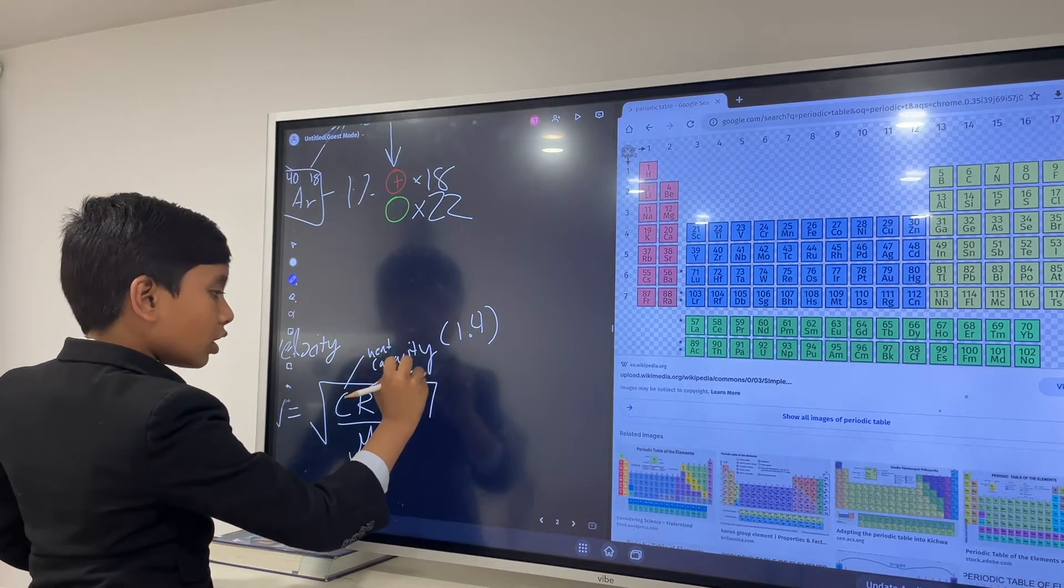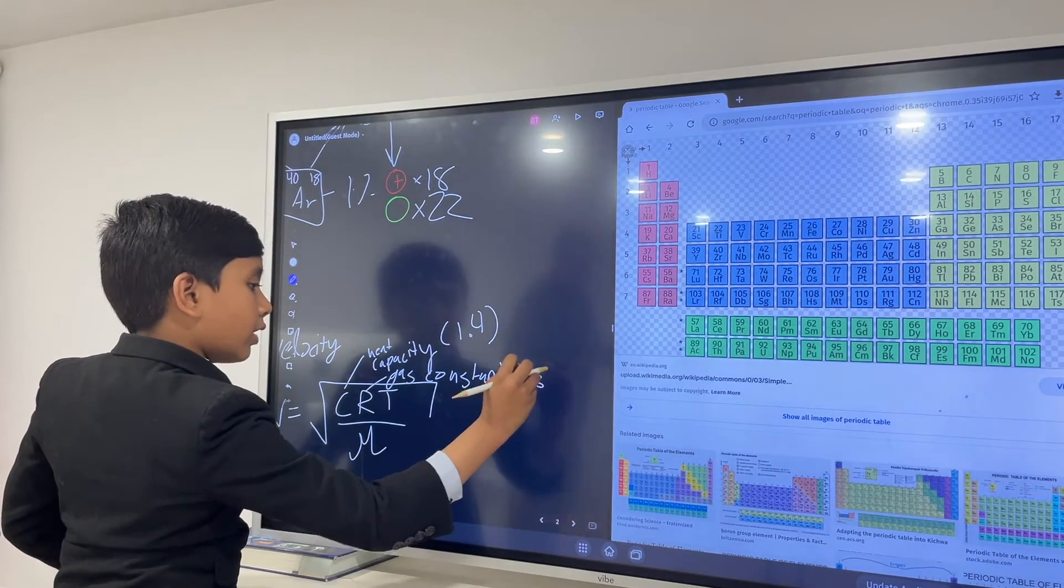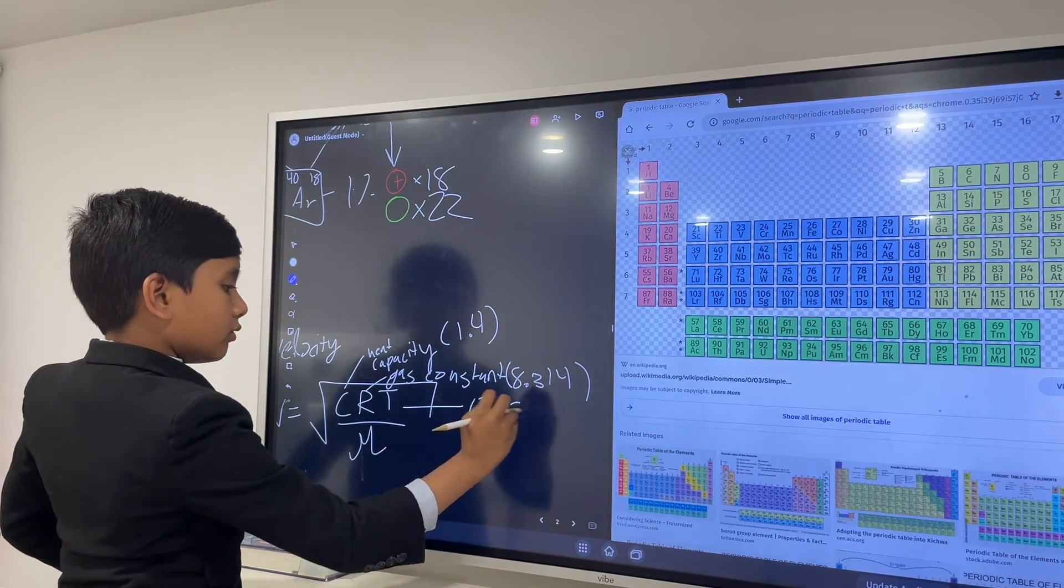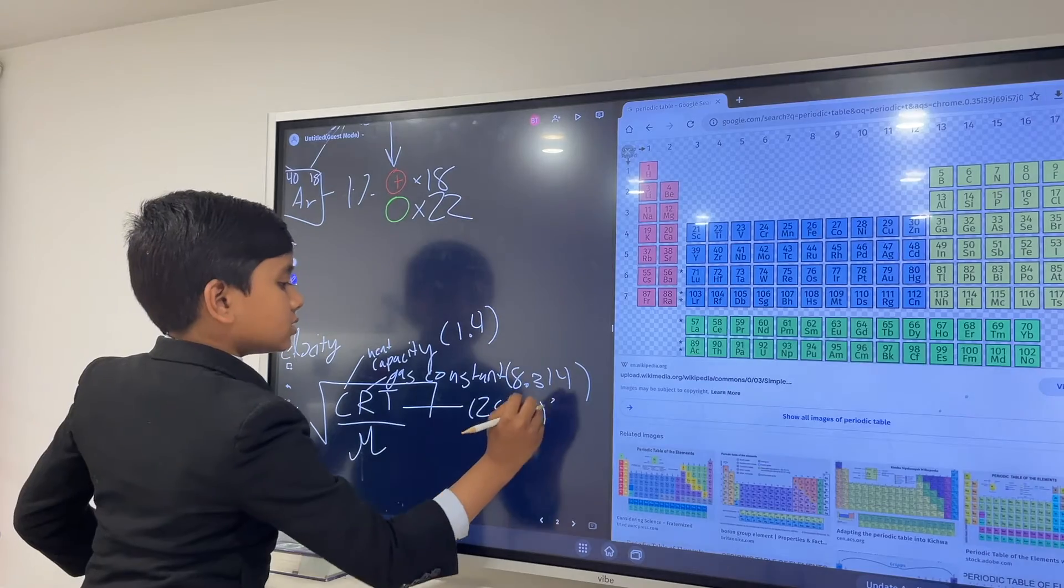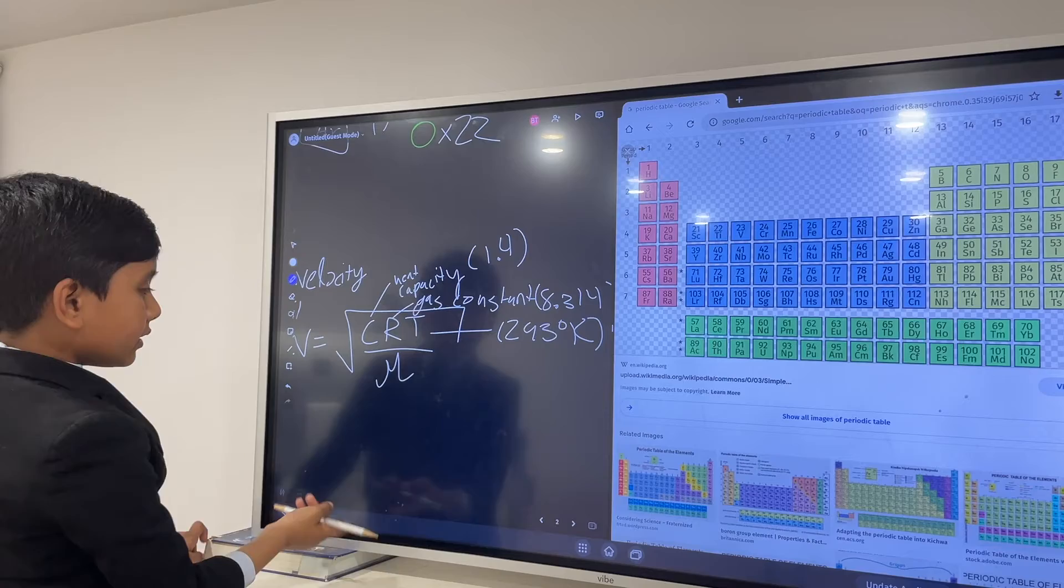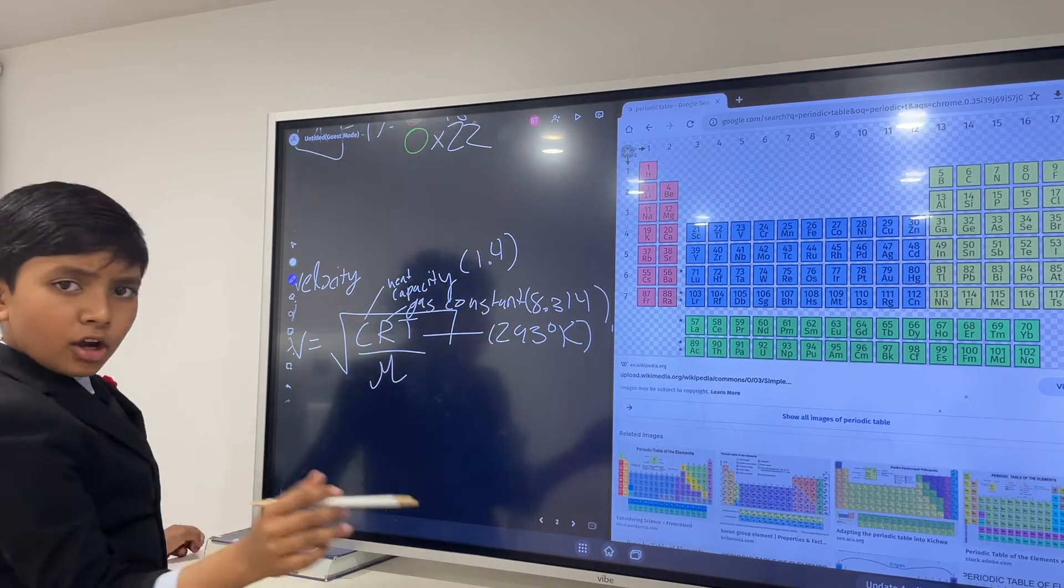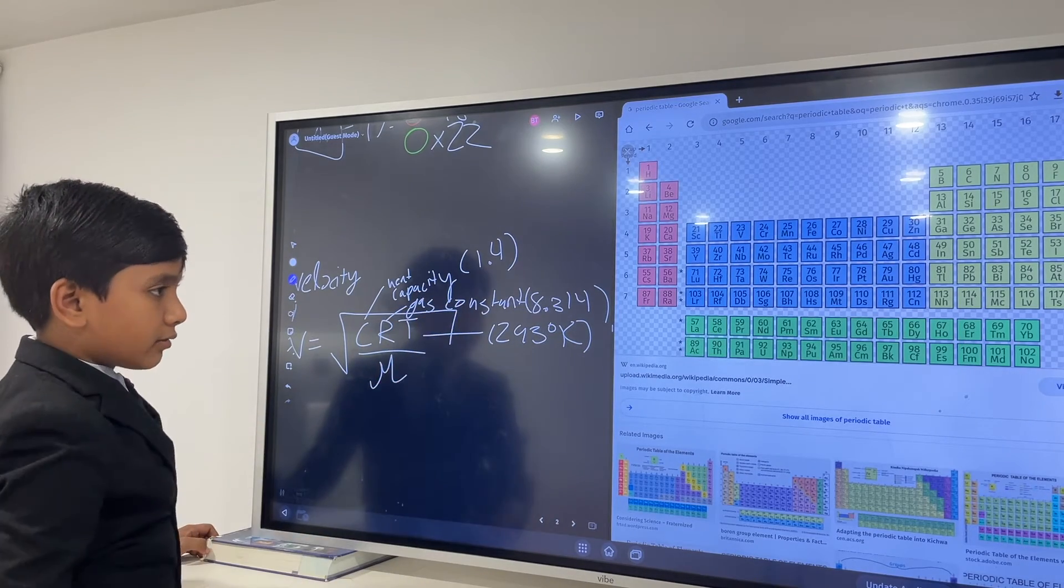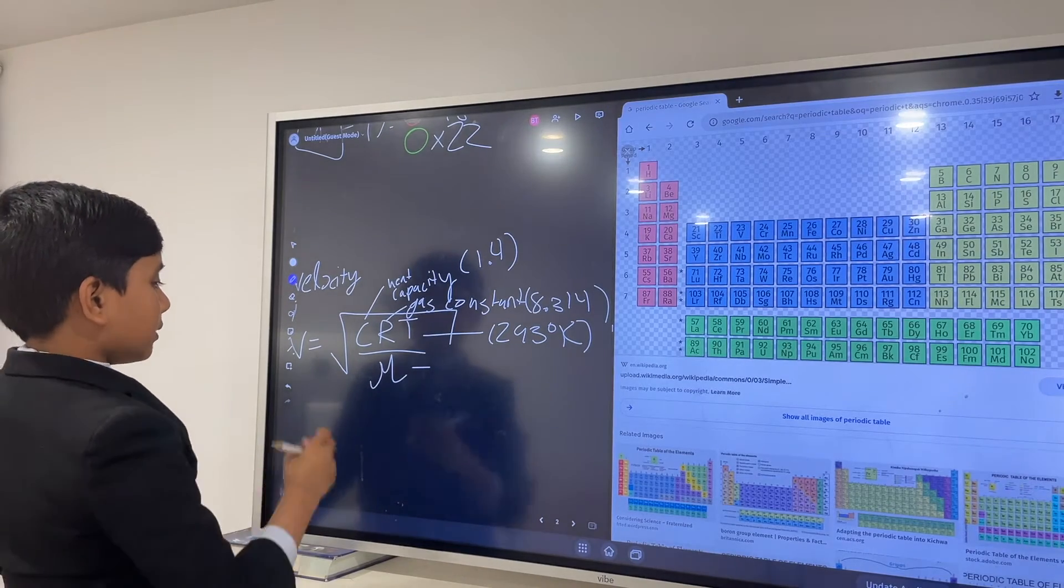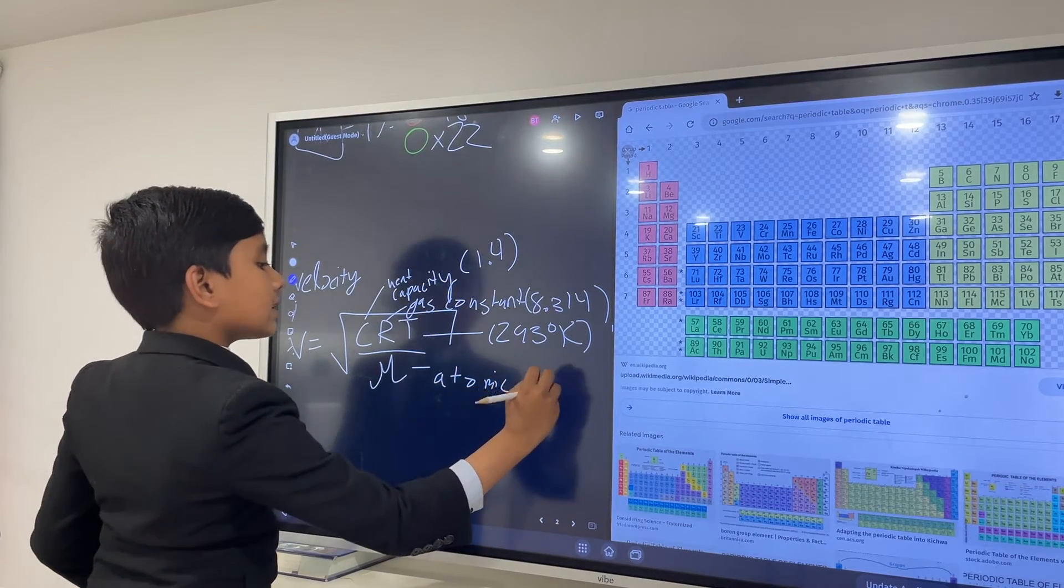There's something called the constant, which is around 0.314, always. Then there's the temperature of air, which can be anything, but we'll say 293 degrees in Kelvin. Now finally we have... also, if this seems really, really hot, be reminded that this is just 20 degrees Celsius. So that finally leads to mu. What does that mean? Well, that's atomic mass. And that's exactly what we're trying to find.